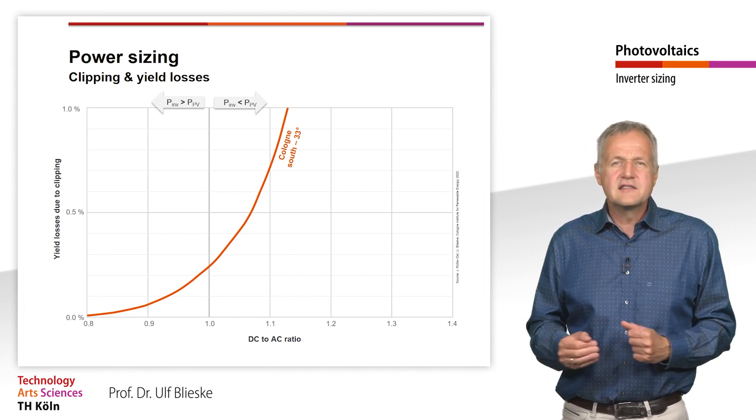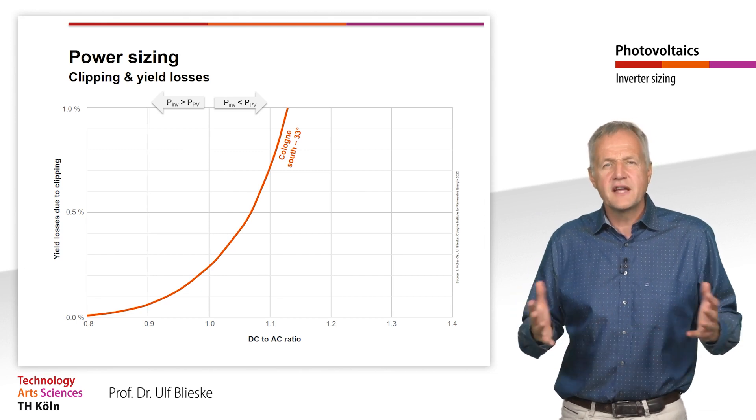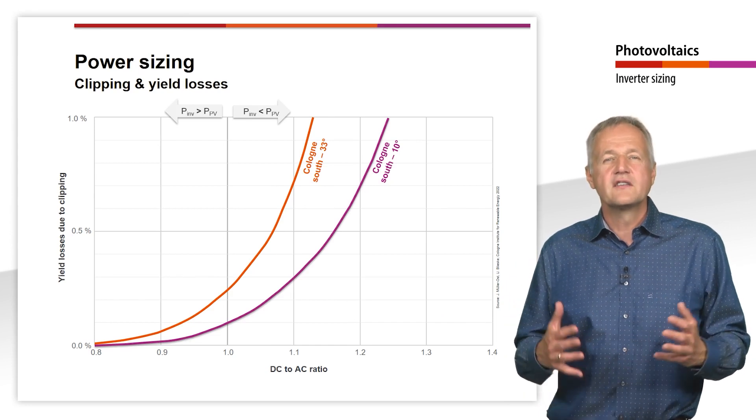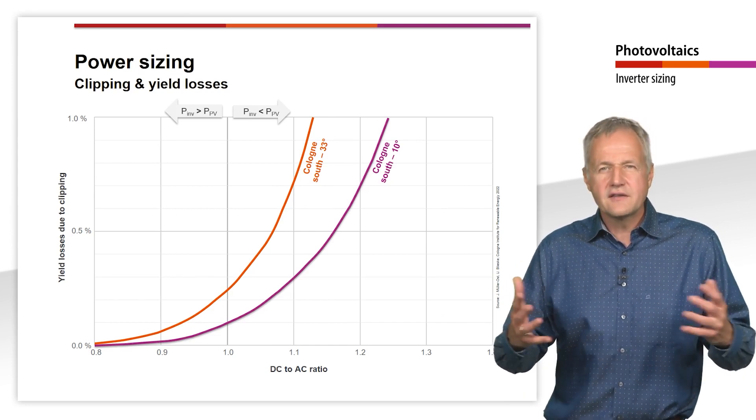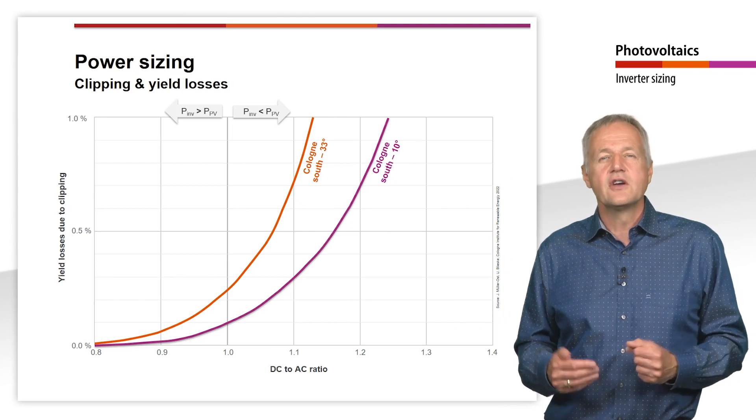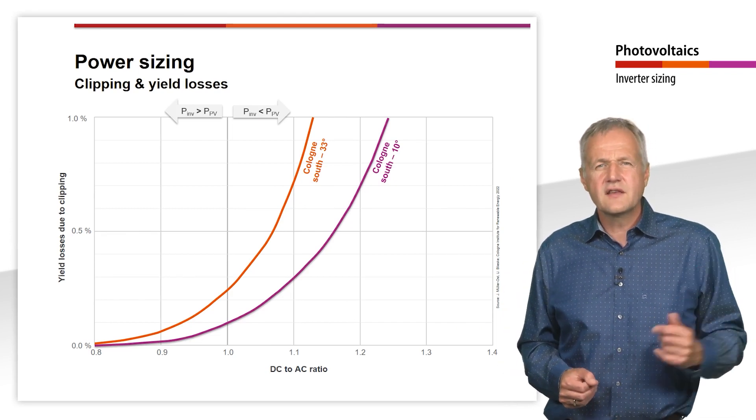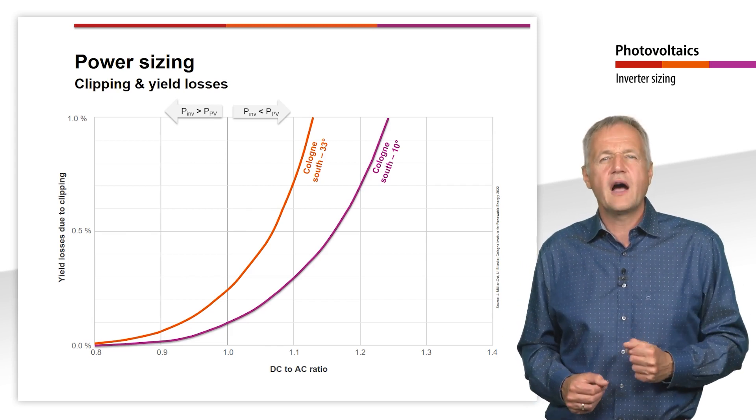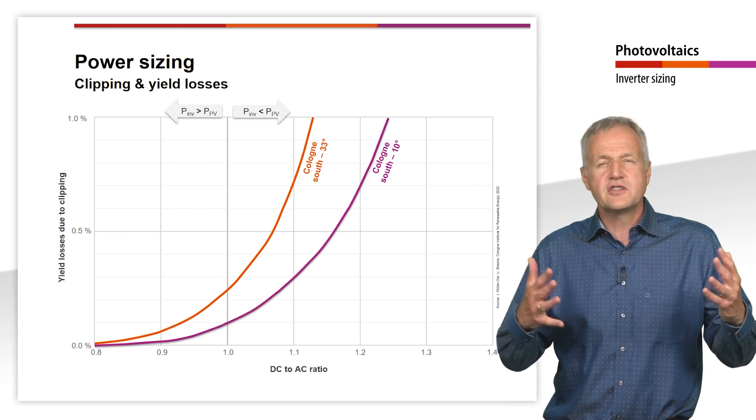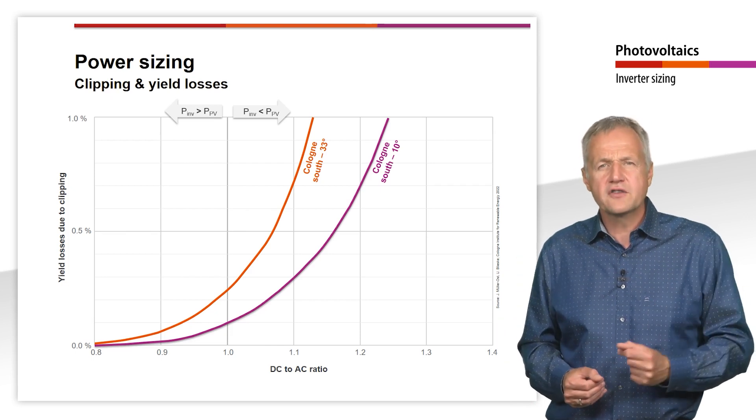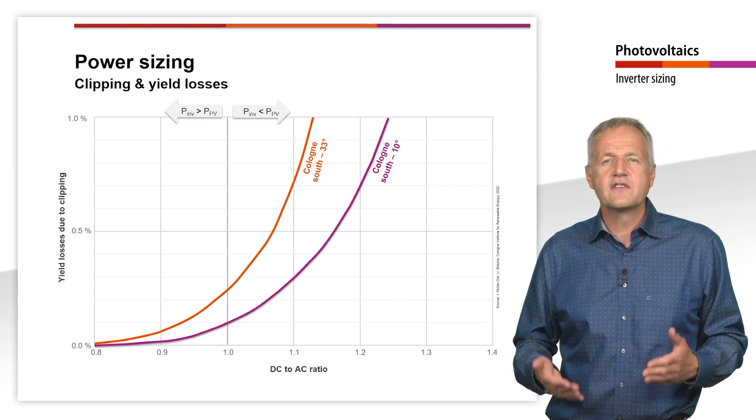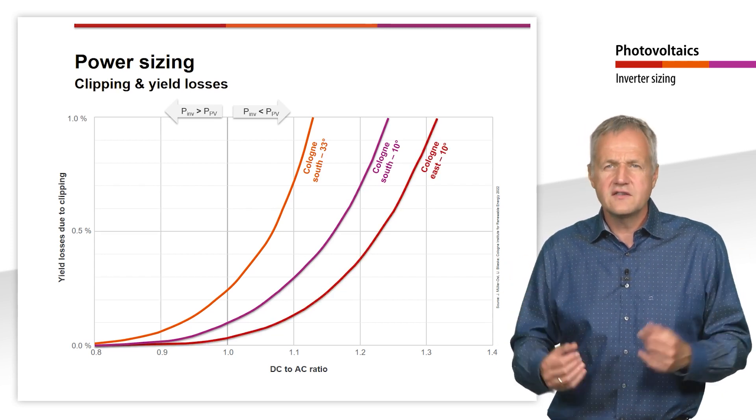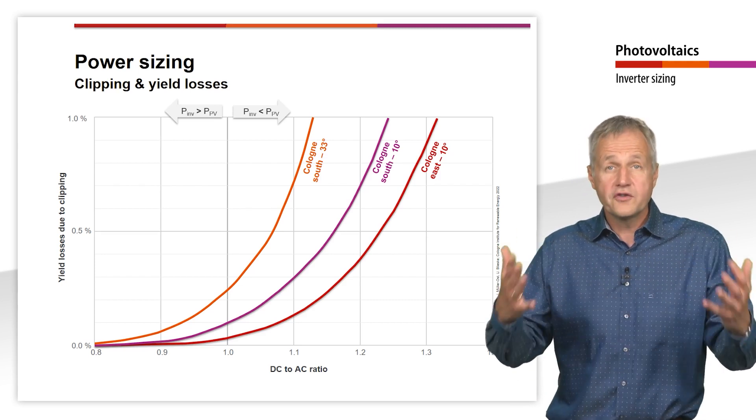For a less deeply inclined plant with 10 degree inclination, however, the inverter can also be sized significantly smaller, since very high irradiance levels occur less frequently due to the lower inclination. In this case, a maximum DC to AC ratio of 1.25 would still be okay. This situation is even more extreme with an east-west oriented plant with 10% inclination angle. Here, the DC to AC ratio can even be up to 1.3.